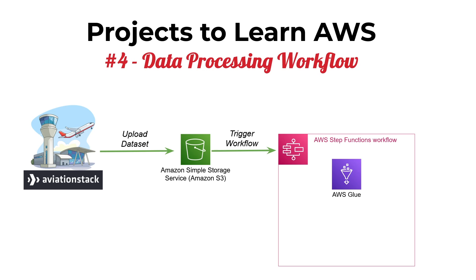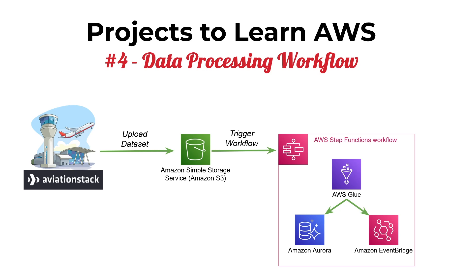In our AWS Glue job we look at the S3 data set we just uploaded and perform aggregation statistics — for example, summarizing the total amount of inbound and outbound departures for a particular aviation hub. Once we have all our results we can store that data in Amazon Aurora or Amazon Aurora Serverless to save extra cost. Once the data is saved into our database, we can notify other consumers through Amazon EventBridge that the data is ready for consumption.